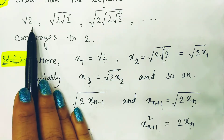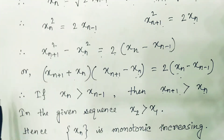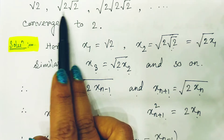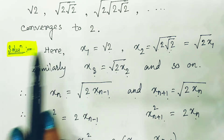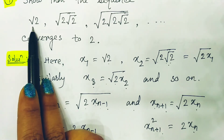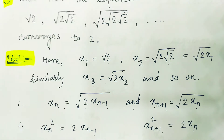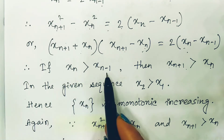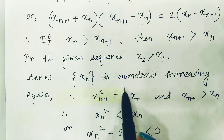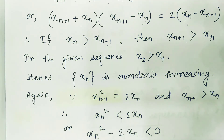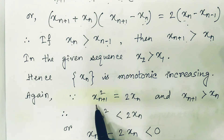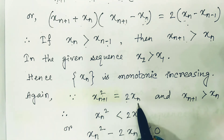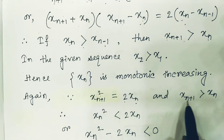Observing the sequence, x1 = √2 is positive and x2 = √(2√2) > x1, so x2 > x1. From this, we can establish by induction that xn > xn-1 for all n, so the given sequence is monotonically increasing.